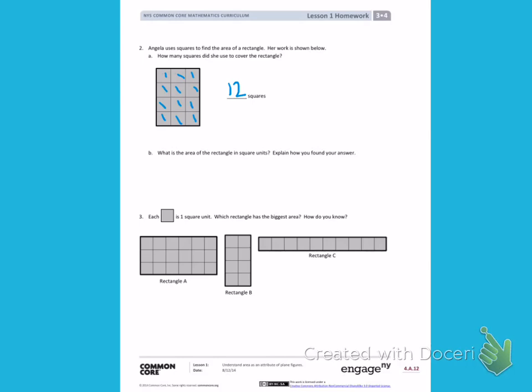Part B. What is the area of the rectangle in square units? Explain how you found your answer. Well, since I know that Angela covered the rectangle with 12 squares, the area is 12 square units because it took 12 squares to cover the rectangle.